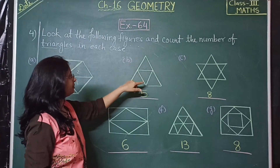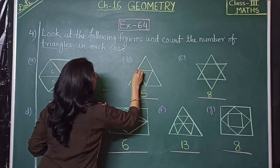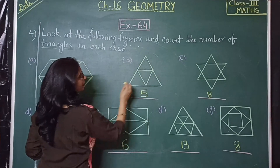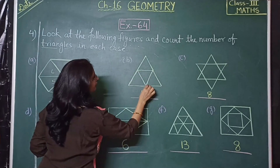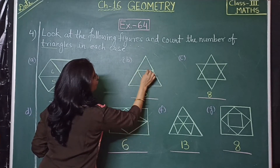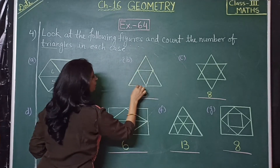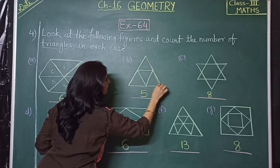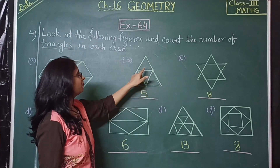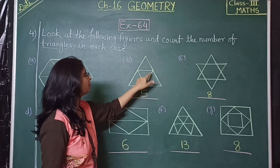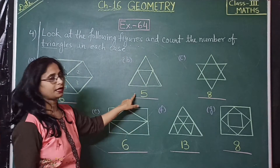In the next figure, we count the triangles: one, two, three, four, and the whole figure itself makes five. So there are five triangles in the second figure.